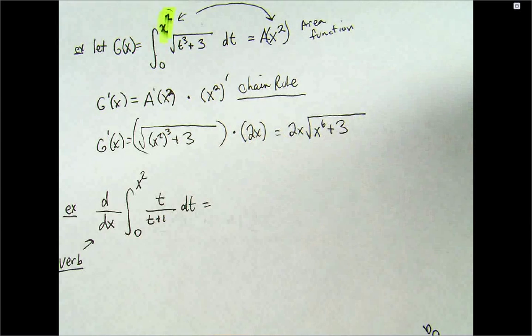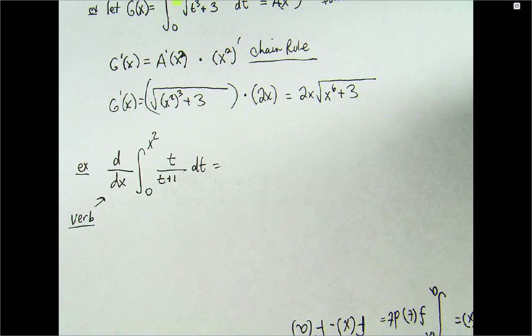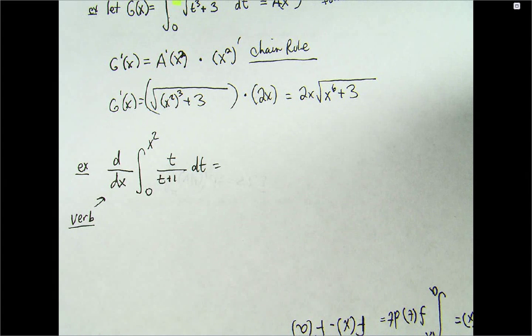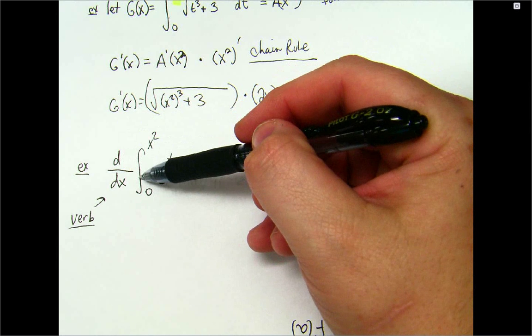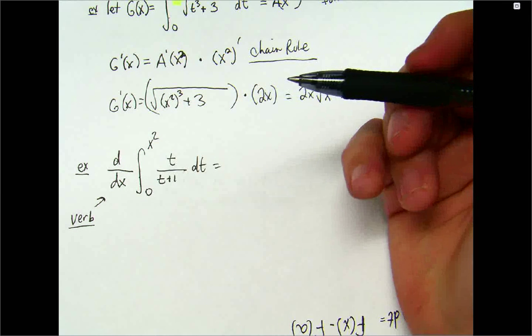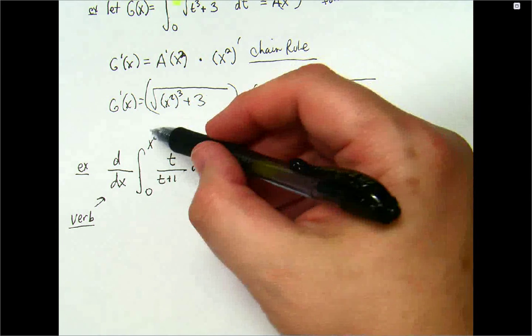Alright, now, something as weird and as complicated as this, actually, once you get used to it, it becomes a very, very easy process. And, you're saying to yourself, this guy's a lunatic. There's nothing easy about what we're doing right now. But, I'm taking a derivative of an integral. What happens to a derivative and an integral when they come together? It's like matter and antimatter. They just cancel each other out. But, there's an x squared up top.